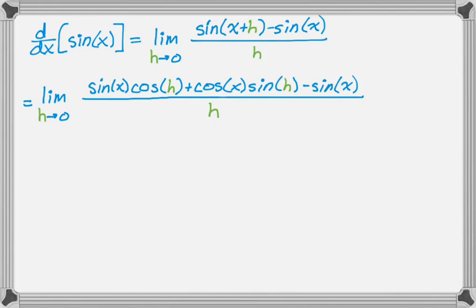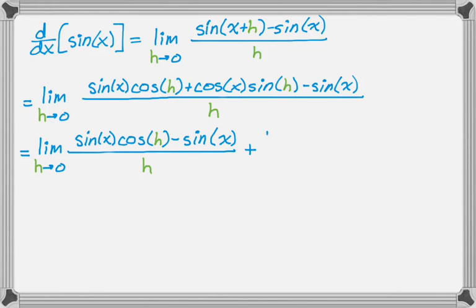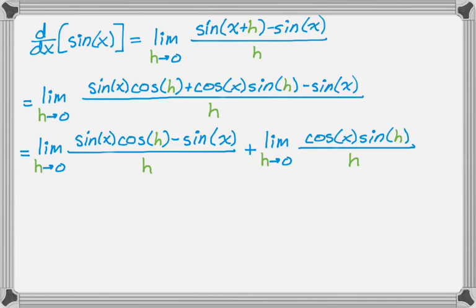The next step is I'm going to break this up into two limits. I'm only allowed to do that if each of the limits exists, but it turns out they will. So I'm doing the limit as h approaches 0 of sine of x cosine of h minus sine of x all over h, plus the limit as h approaches 0 of cosine of x sine of h over h. If you combine those two fractions, you get back to the original fraction, so I haven't broken any rules yet.